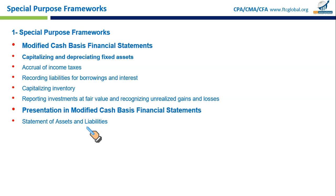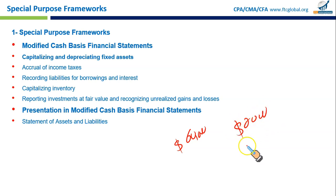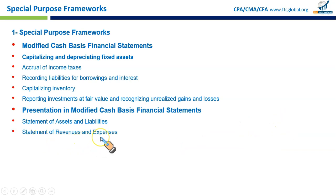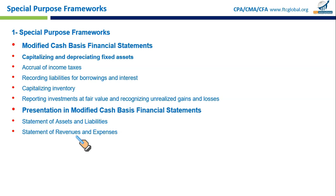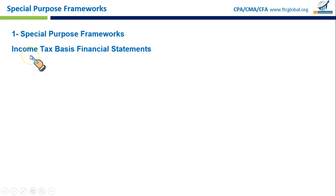For example, a business using modified cash basis may show machinery at $60,000 as an asset and a $2,000 loan as a liability. The Statement of Revenues and Expenses — equivalent to an income statement — shows money collected and paid but also includes modifications like depreciation of assets and taxes owed but not yet paid. For instance, a non-profit would record donations as revenues but also include depreciation of buildings, computer equipment, and furniture.